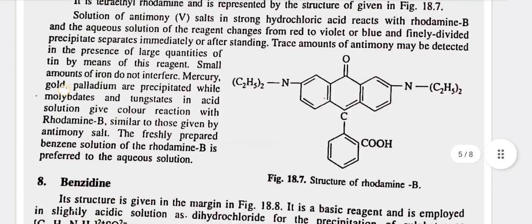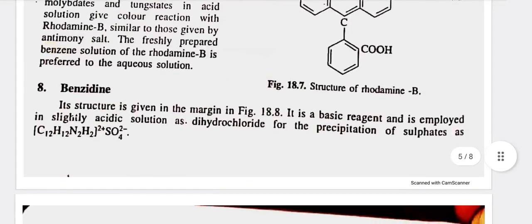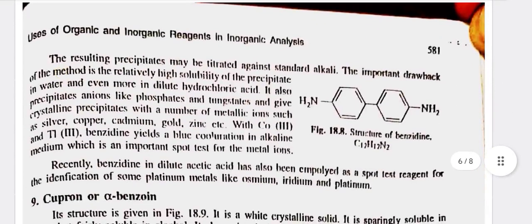The freshly prepared benzene solution of rhodamine B is preferred to the aqueous solution. Eighth, benzidine — its structure is given in figure 18.8. It is a basic reagent and is employed in slightly acidic solution as dihydrochloride for the precipitation of sulfates. The resulting precipitates may be titrated against standard alkali. The important drawback of the method is relatively high solubility of the precipitate in water and even more in dilute hydrochloric acid. It also precipitates anions like phosphates and tungstates and gives crystalline precipitates with a number of metallic ions such as silver, copper, cadmium, gold, zinc, etc. With Cu³⁺ and Ti³⁺, benzidine yields a blue coloration in alkaline medium, which is an important spot test for the metal ions.